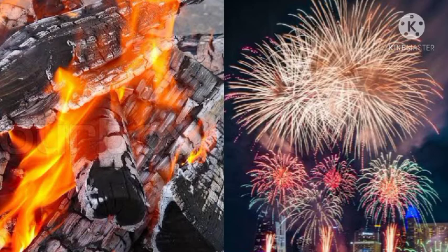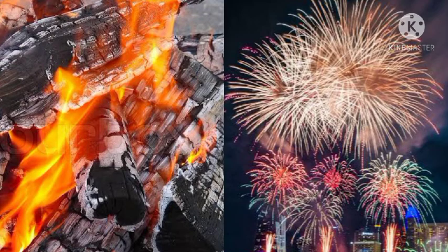Now look at burning of wood or a firecracker. In these changes, new substances are formed — when we burn wood, coal, ash, and smoke are produced. A change due to which one substance transforms into another substance with new and different properties is called a chemical change. Burning wood changes to ash, coal, and smoke — all newly formed substances with different characteristics. Such changes are called chemical changes.